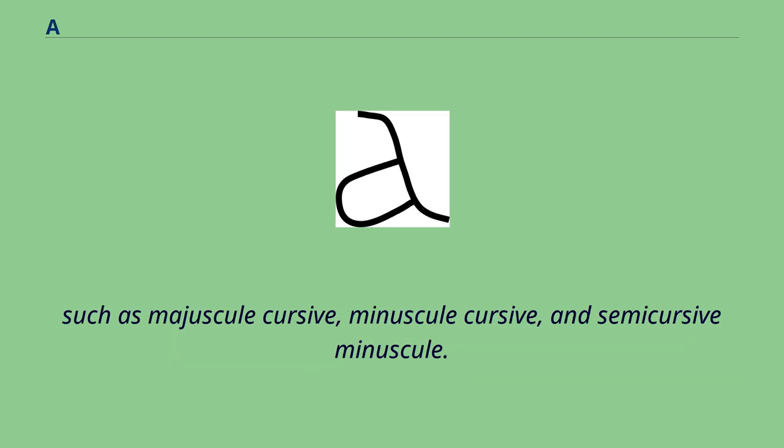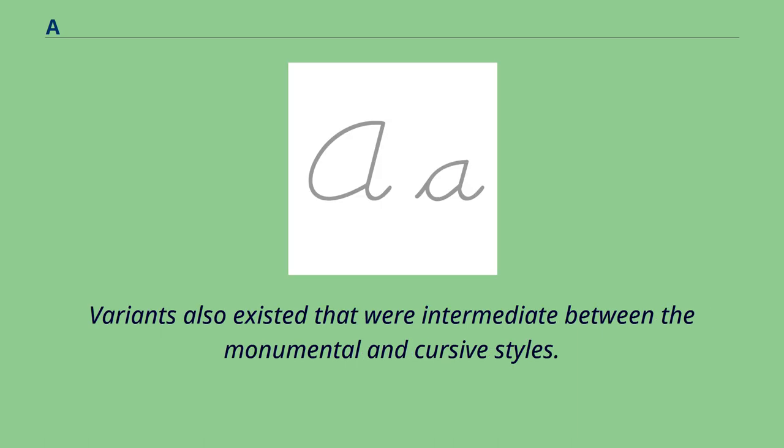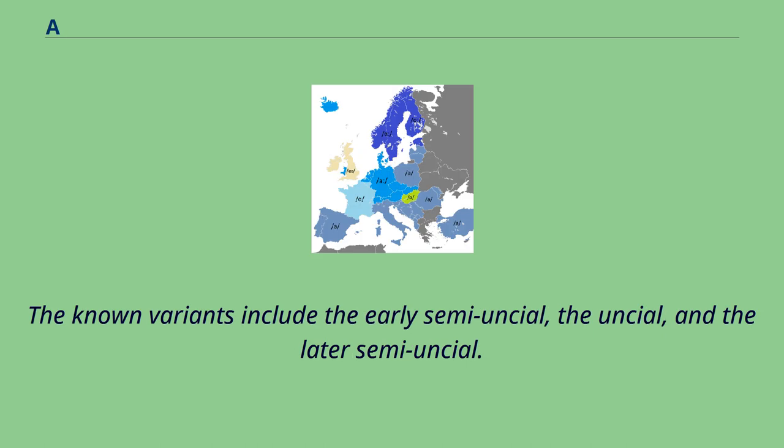Such as majuscule cursive, minuscule cursive, and semi-cursive minuscule. Variants also existed that were intermediate between the monumental and cursive styles. The known variants include the early semi-uncial, the uncial, and the later semi-uncial.